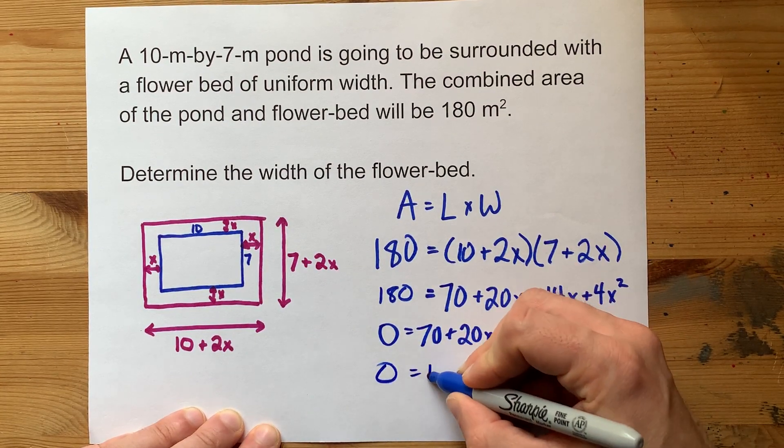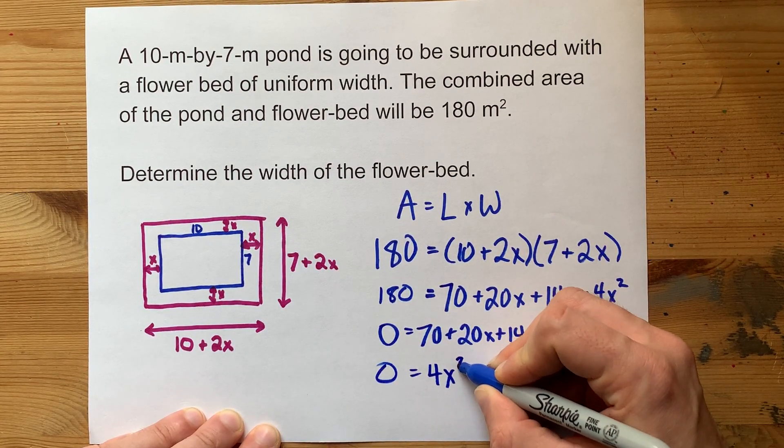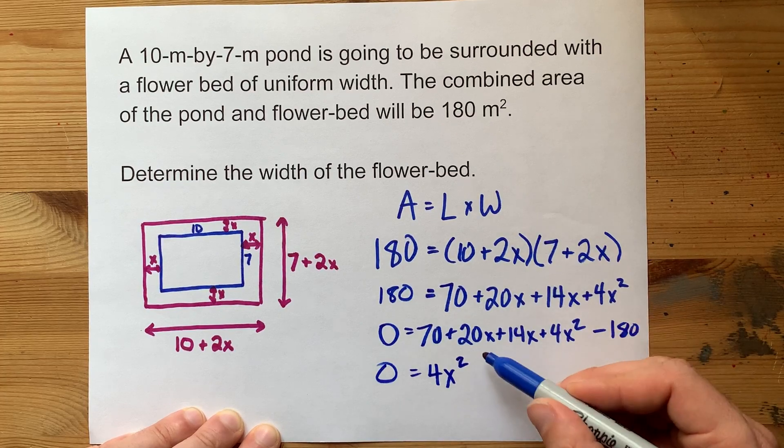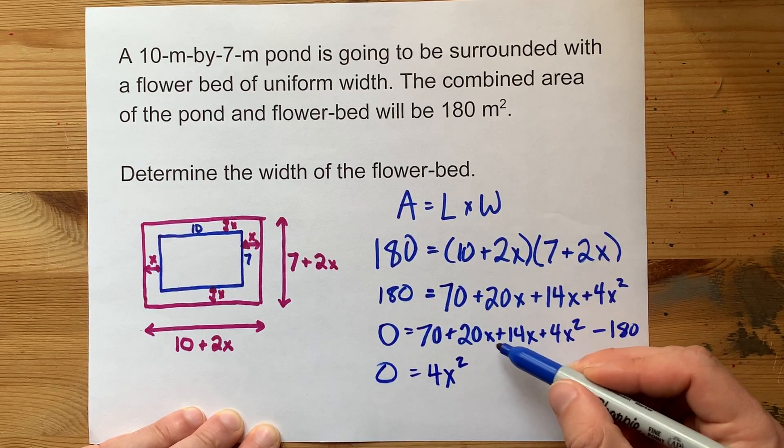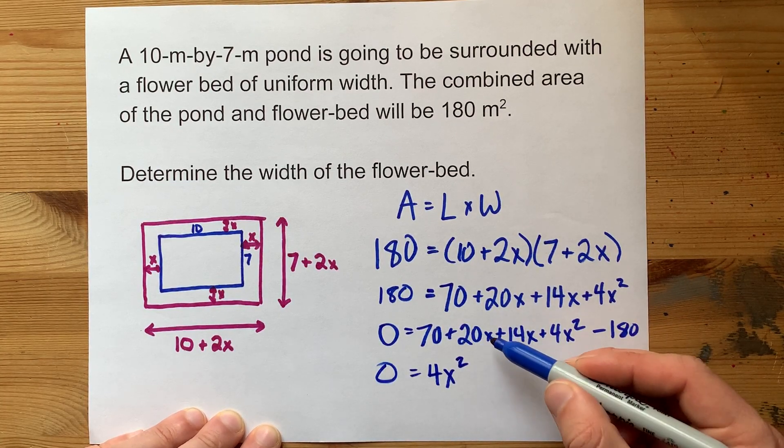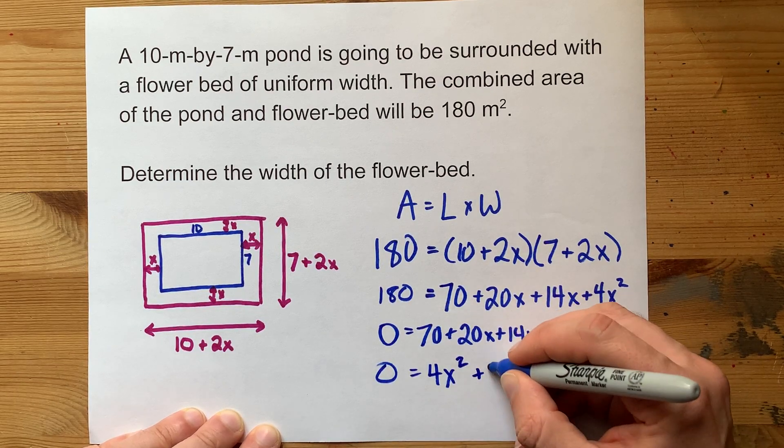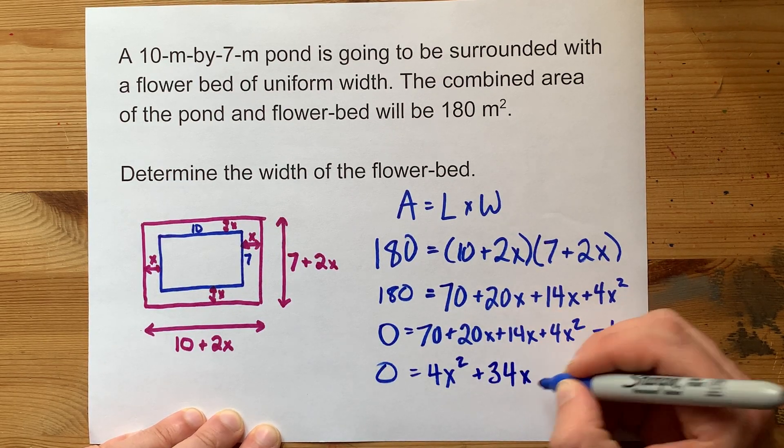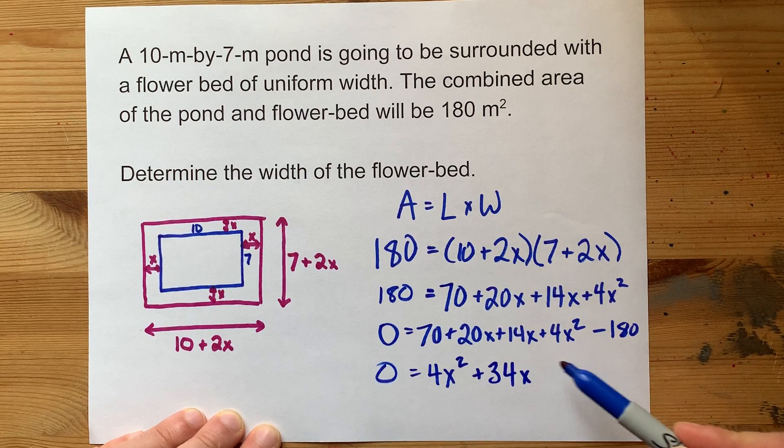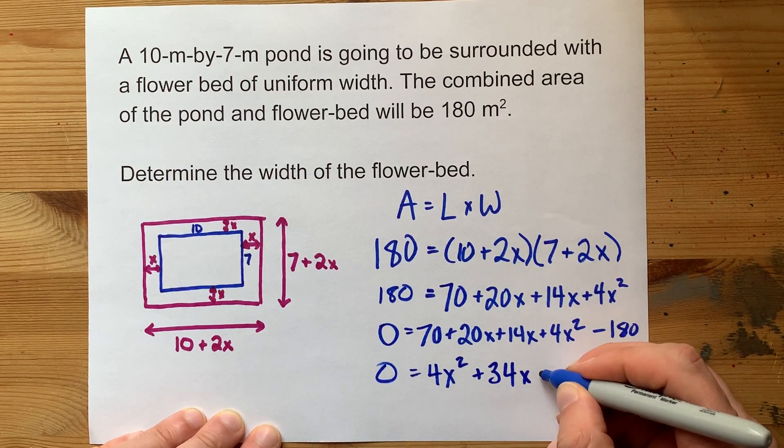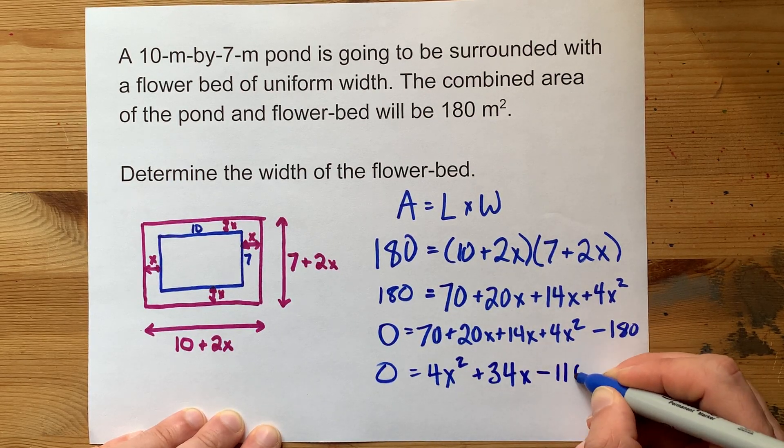Here I've got 4X squareds still on the right-hand side of my equal sign. In terms of just Xs, I've got 34 of them. 20 plus 14 is 34X. And I've got a 70 minus 180, which together make negative 110.